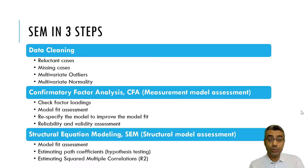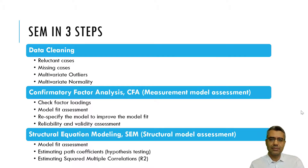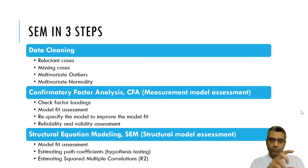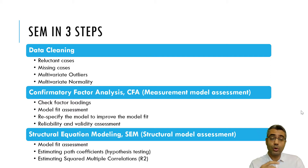When we test the hypotheses, we estimate the path coefficients and their p-values. We also estimate the R-squared, or squared multiple correlations, to understand how well our model predicts the dependent variable. We have already covered data cleaning, and from now on I want to show you how to run CFA and SEM.